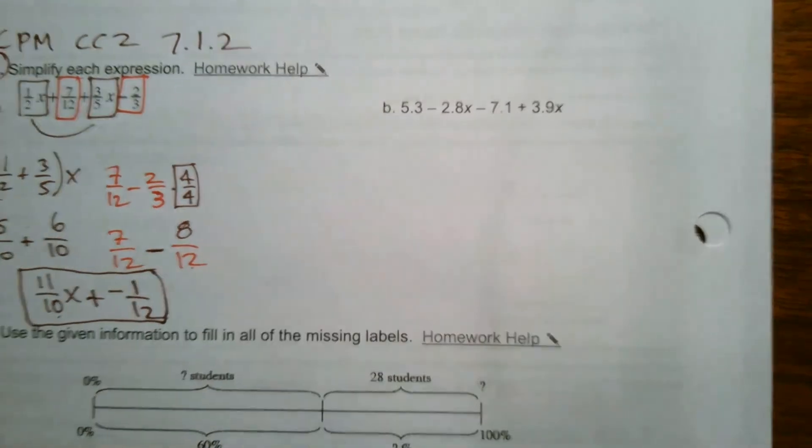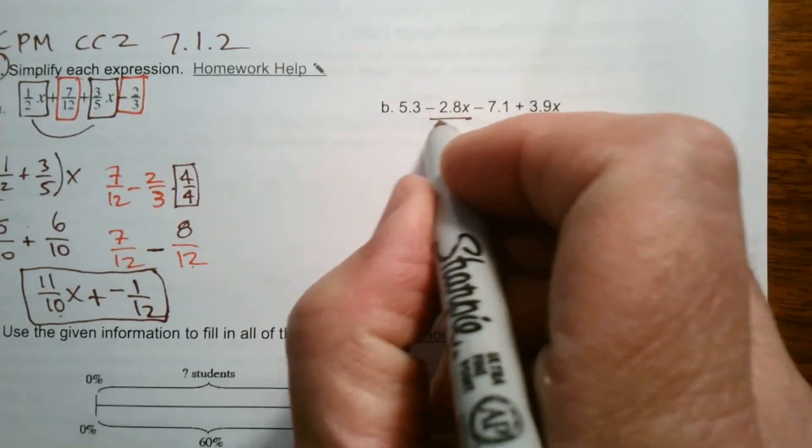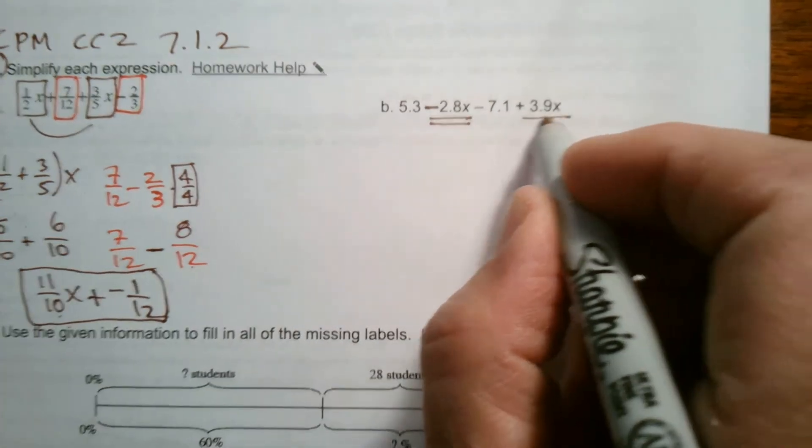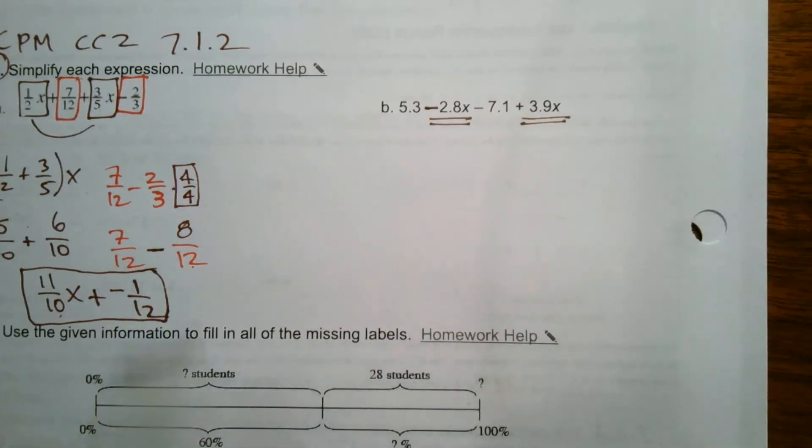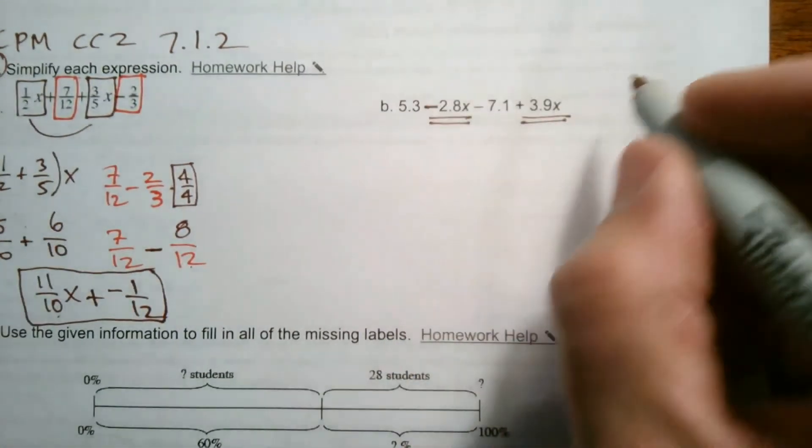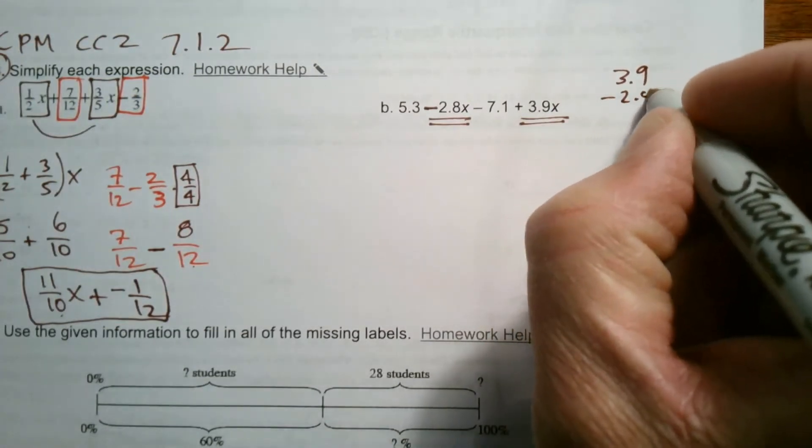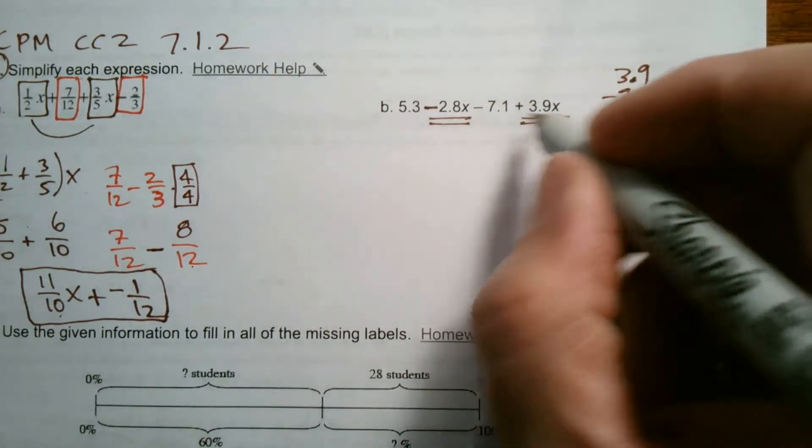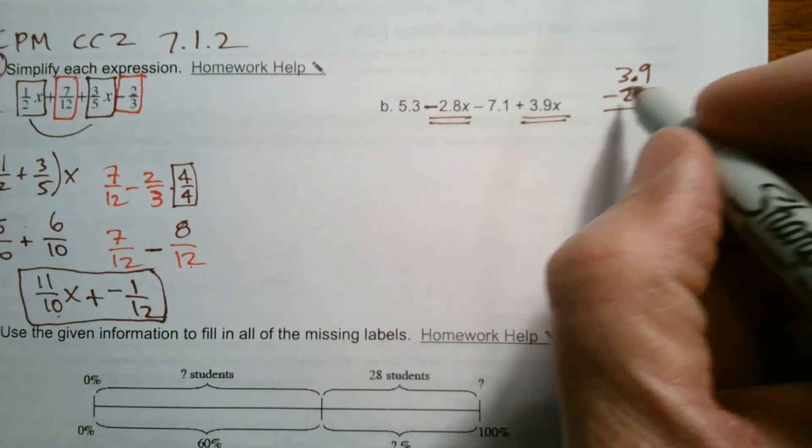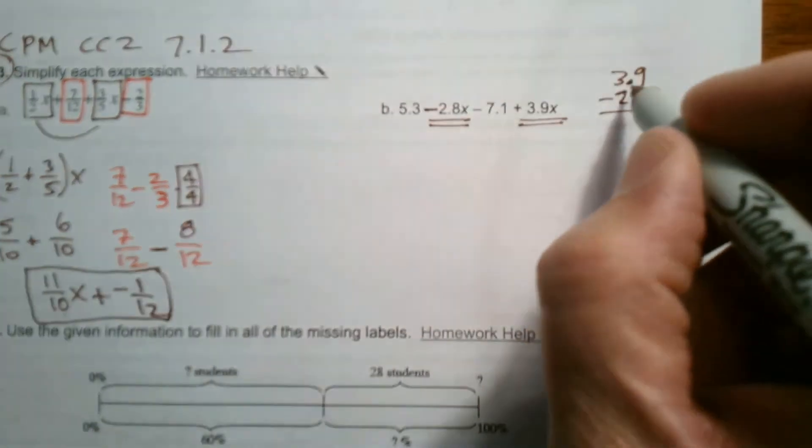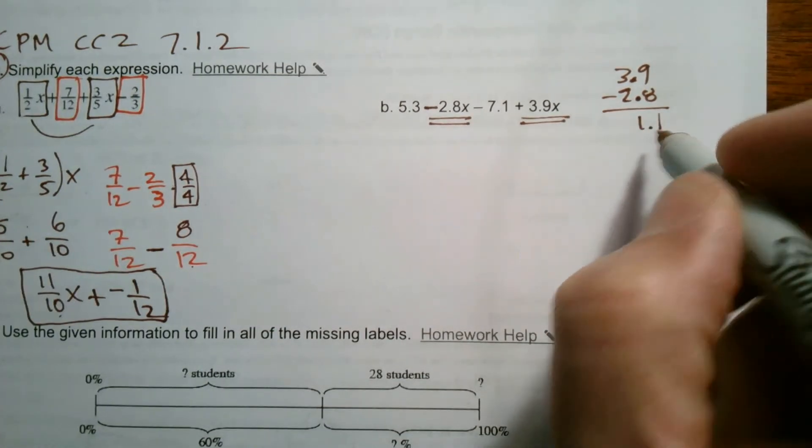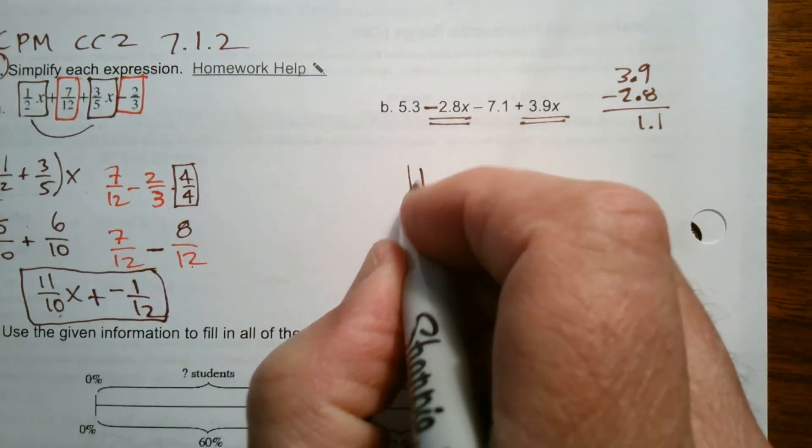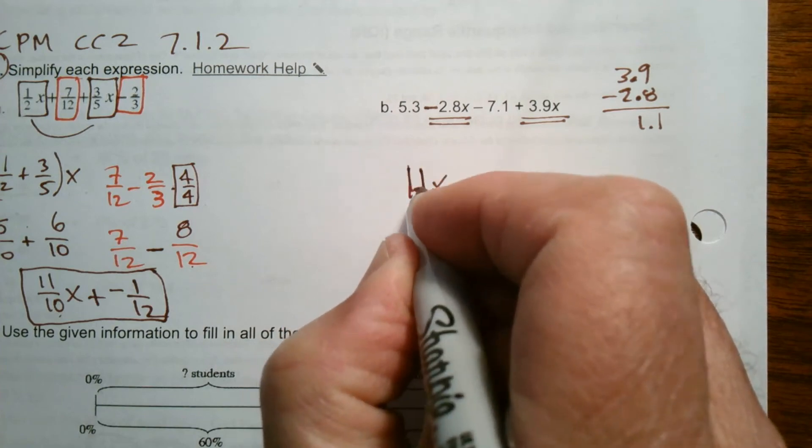This one is in decimals, so same situation. Look for my x terms. That's a negative. Pay attention to the sign in front. Negative 2.8x and a positive 3.9x. So when you have a negative number and a positive number, you subtract them. So I'm just going to take the 3.9 minus the 2.8. When you're subtracting decimals, you line up the decimal point and make sure the larger number is on top, the larger absolute value. In this case, it's the 3.9, and I'm subtracting 3.9 minus 2.8. So I get 1.1 when I subtract, and there's more positives than negatives. So it's a positive 1.1x.